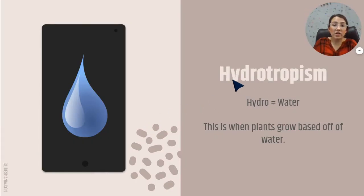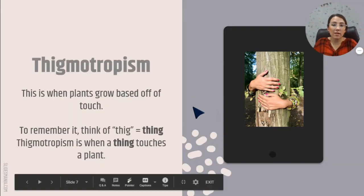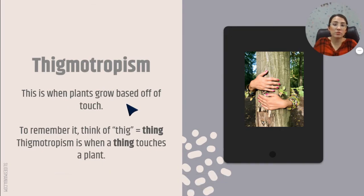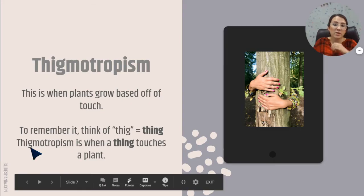Hydrotropism — hydro means water. This is when a plant grows based off of water. The last one is thigmotropism, and this is how the plants respond to touch. The way I remember it is: 'thig' makes me think of 'thing.' So thigmotropism is when a thing touches a plant.